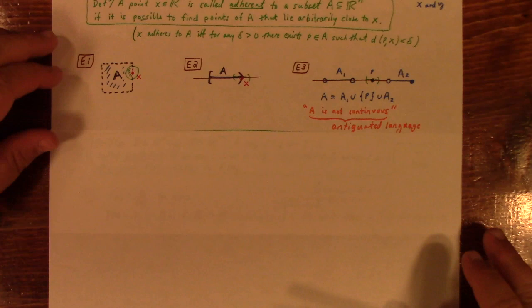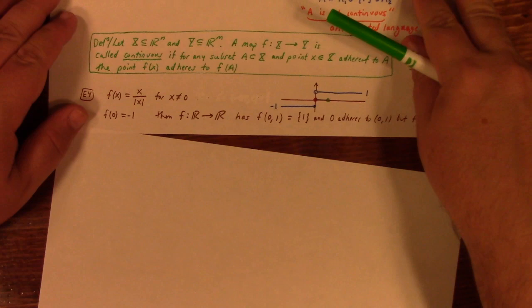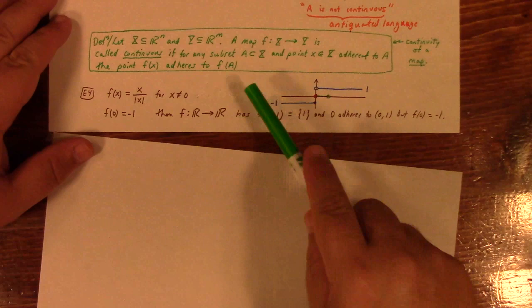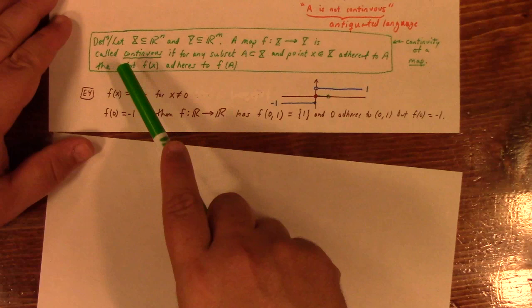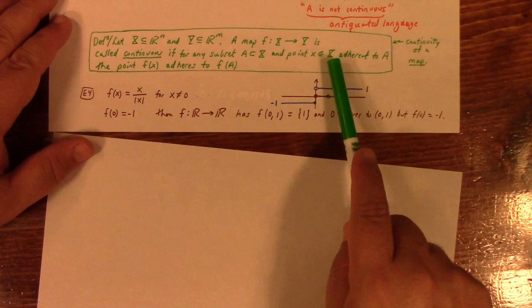Now, here's his definition of continuous mapping in terms of adherence. A function from subset of R^n to a subset of R^m, a map F from X to Y is called continuous if for any subset A of X and point X, which is adherent to A, then the point F of X adheres to F of A.